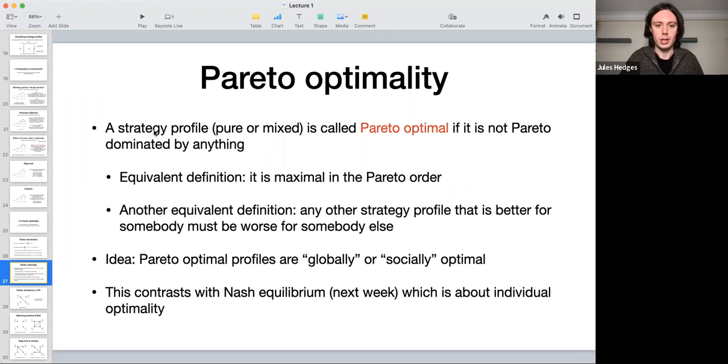Now we want to say that a strategy profile is going to be called Pareto optimal if there is no other strategy profile that Pareto dominates it. So there's a couple of ways you can think about this. One is that Pareto domination, the relation of Pareto domination, is defining a sort of relation on strategy profiles. And so being Pareto optimal says that it's maximal in the Pareto order and the Pareto order is a partial order. So it can have multiple different maxima. They're not kind of linearly ordered.